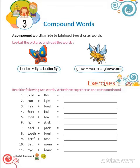Now, come to the exercise. What we have to do in this? We have to join these two words to form a compound word. Like gold and fish — goldfish. Sun and light — sunlight.